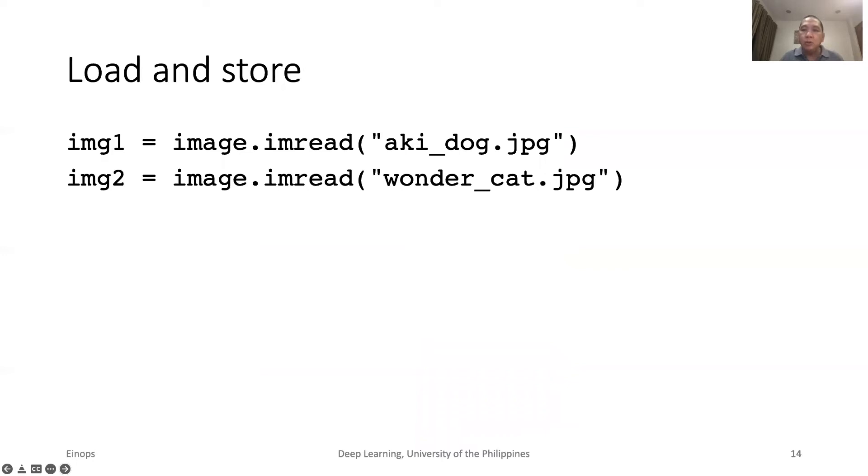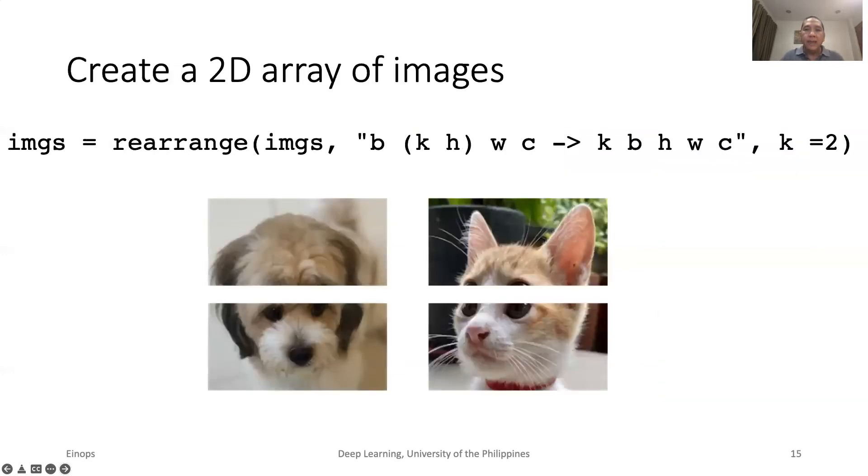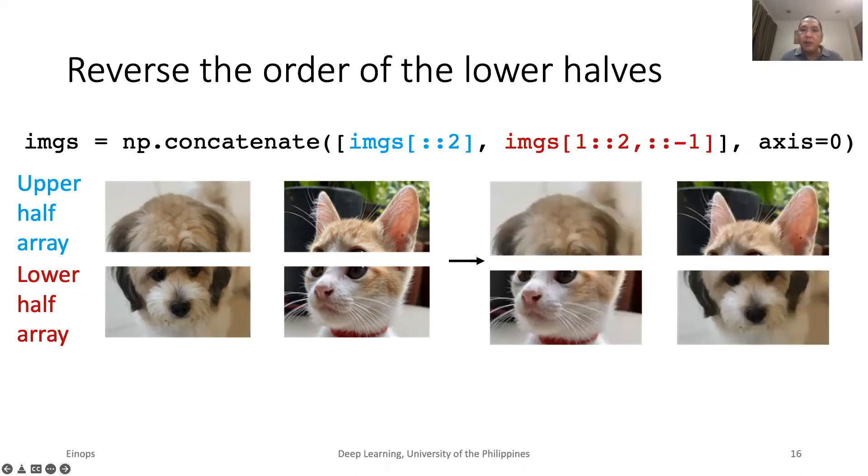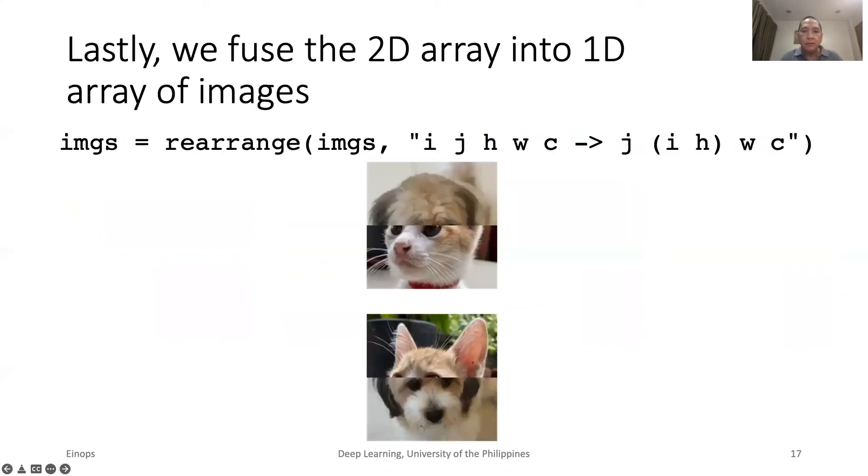Let us do this step by step. First, load the two images and store them in a 1D array of images. Then, create a 2D array of images by breaking each image into the lower and upper half. Afterward, we reverse the order of the lower half images by using slicing. To do this, we slice the 2D array first into lower half array and upper half array. Then, we reverse the order of the lower half using slicing. The last step fuses the two arrays using numpy concatenate.